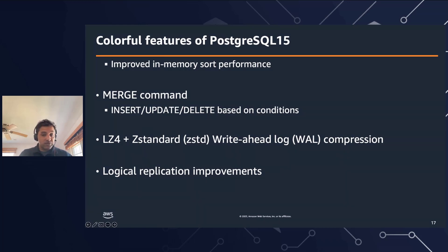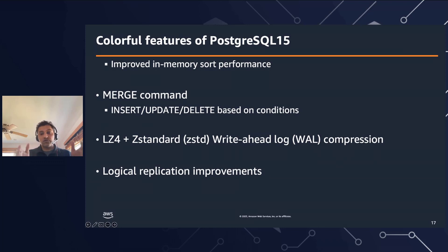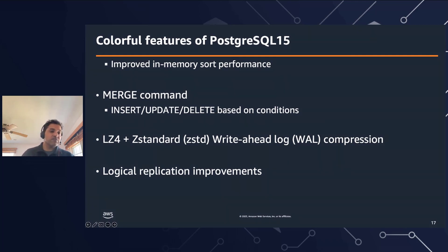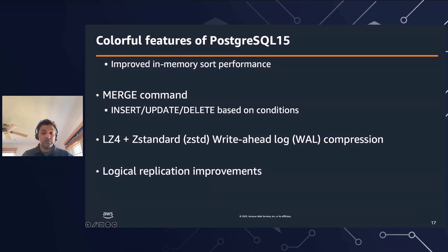Last but not least, there were improvements around logical replication. Postgres has been constantly adding logical replication functionality since version 10. In Postgres 15, one key improvement is row and column filtering. If you're logically replicating a table and want to ignore certain columns or restrict certain rows from being replicated, you now have a built-in capability to filter out specific columns and rows. To conclude, I have a short demo to show the MERGE command, using a couple of tables to demonstrate how merge can be used to combine table data.